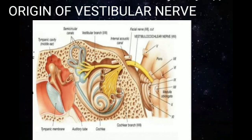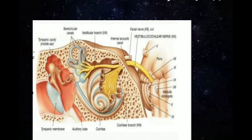The central process of the vestibular nerve is in close relation with the cochlear nerve, facial nerve, and the labyrinthine vessels in the internal acoustic meatus. Further, this nerve reaches the cerebellopontine angle to get attached to the brainstem.